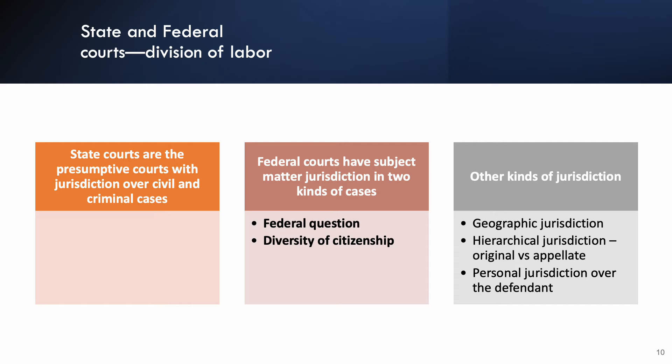So let's talk about this division of labor. State courts are the presumptive courts with jurisdiction over almost all civil and criminal cases — if you're going to sue somebody, chances are you should be going to the state courthouse. Federal courts have subject matter jurisdiction in two kinds of cases: federal question jurisdiction, meaning the case arose under federal law, and diversity of citizenship, where the defendant and plaintiff are from different states.